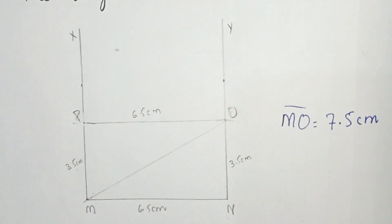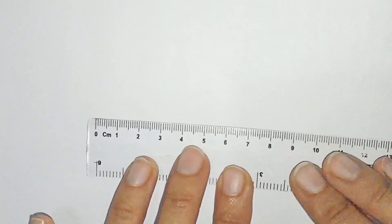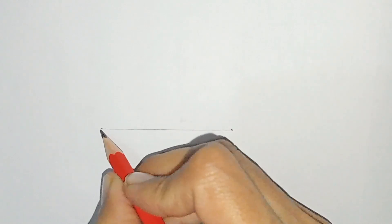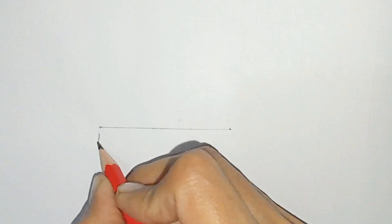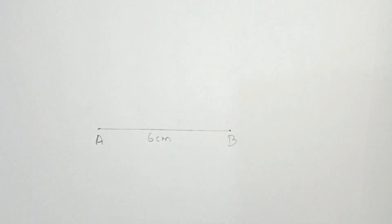Question number 13: construct a rectangle ABCD with one side measuring 6 centimeters and a diagonal of 7 centimeters, and write down the breadth of the rectangle. I am drawing the line of 6 centimeters — this line is AB, and this is 6 centimeters. Now I am constructing the angle of 90 degrees at points A and B using the compass.